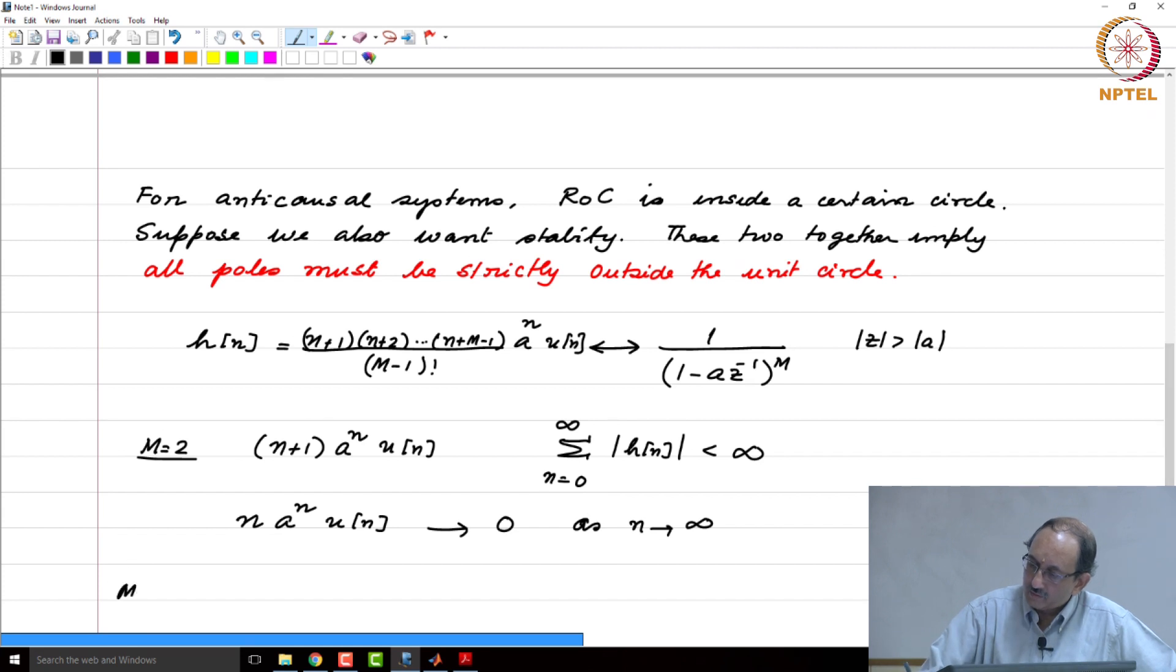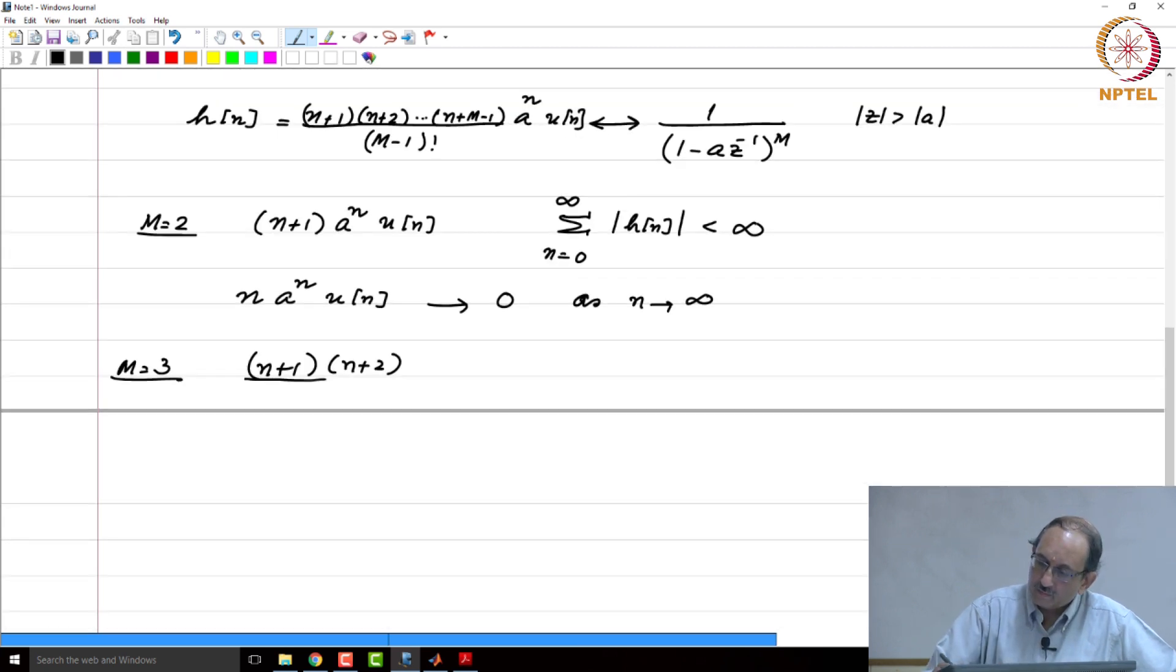If you had m equal to 3, you have n plus 1 times n plus 2 by 2 factorial a to the n u of n. You will be looking at in terms of time domain behavior, you will be looking at the behavior of n squared a to the n u of n. Because if you multiply this out, this will be n squared plus 3n plus 2. If you look at n squared times a to the n u of n, again this tends to 0 as n tends to infinity.